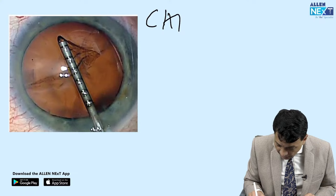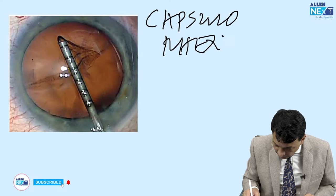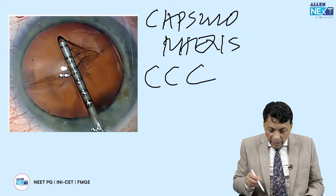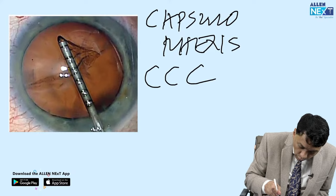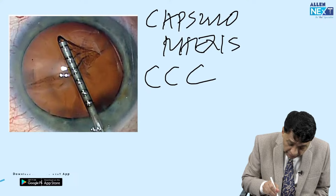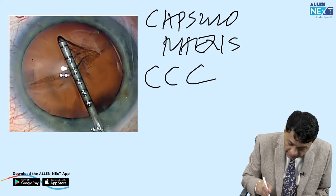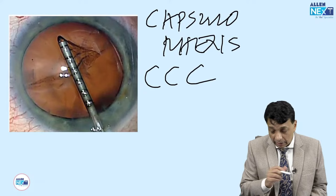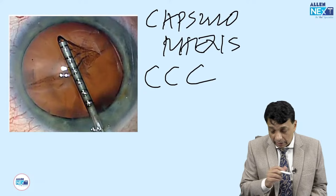We are again seeing capsulorhexis — CCC, continuous curvilinear capsulorhexis — being torn in a single fluid motion. Unlike the first slide where we did trypan blue staining, here you can see the capsule because there is a red reflex coming from an immature cataract. We can see the capsule and cut it in a continuous curvilinear capsulorhexis opening.